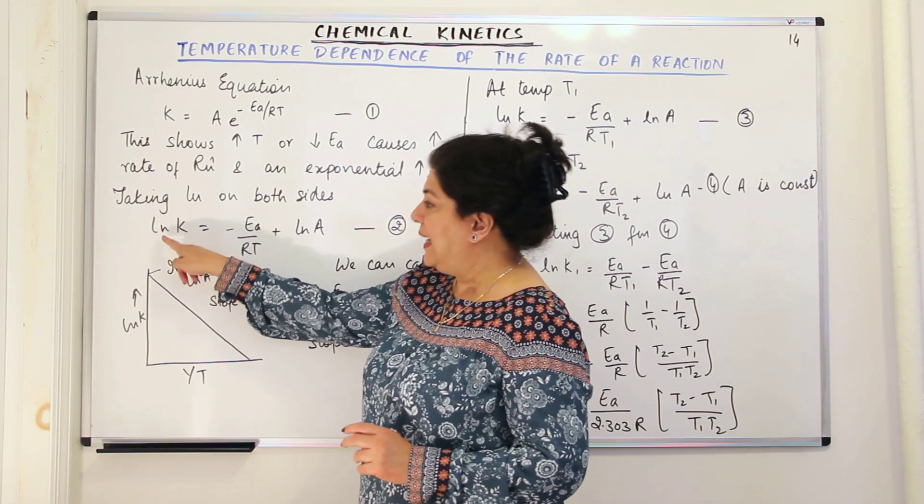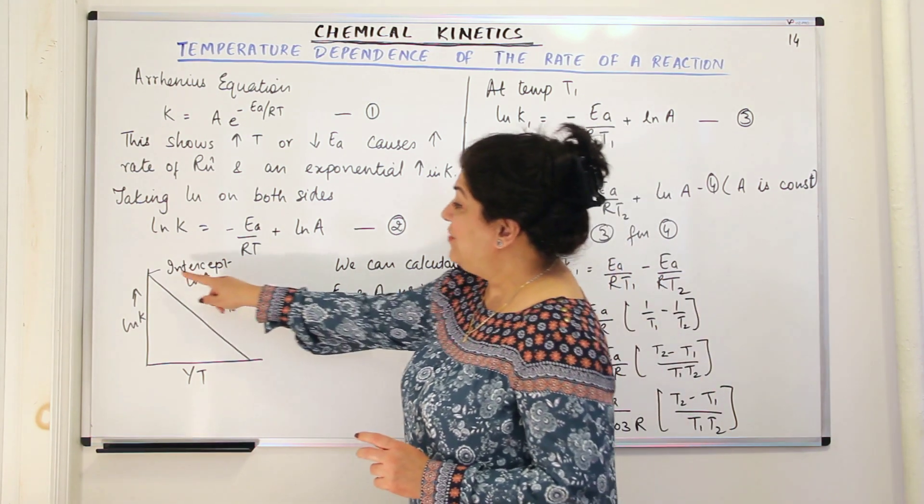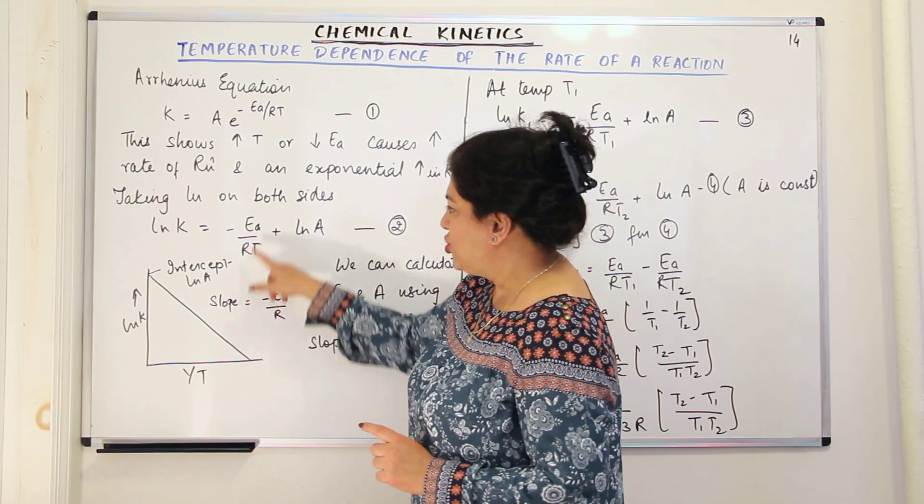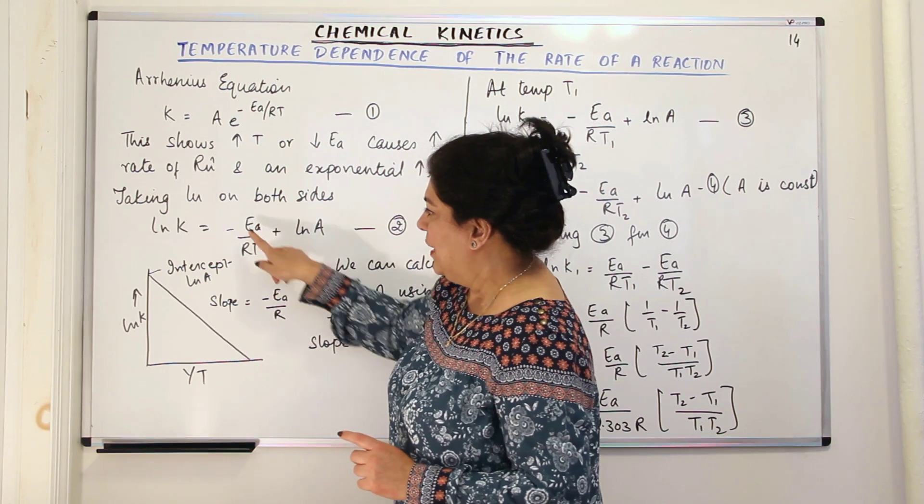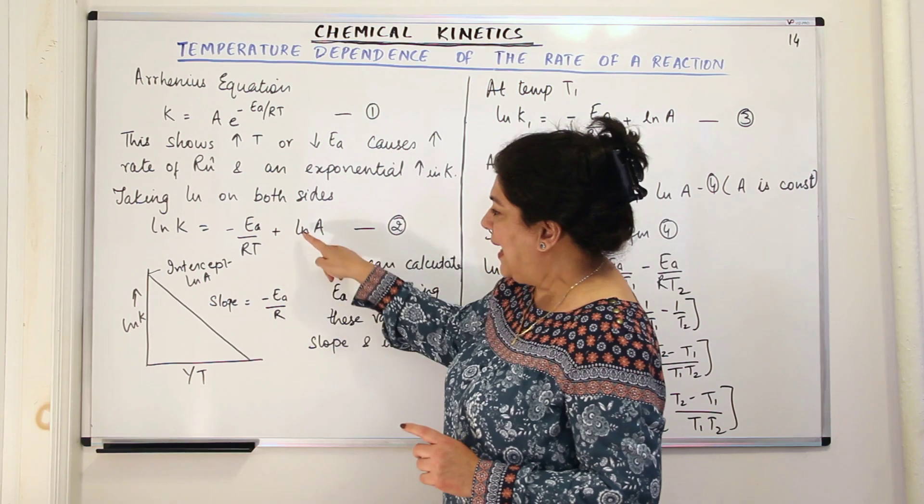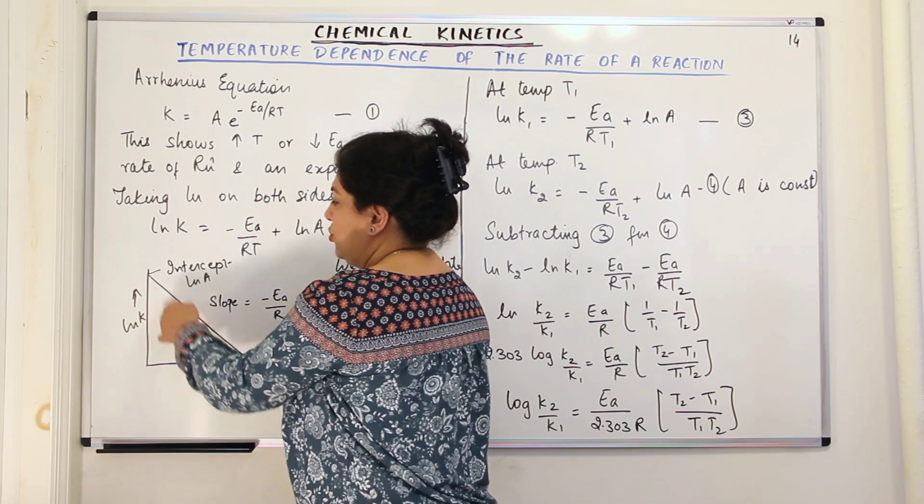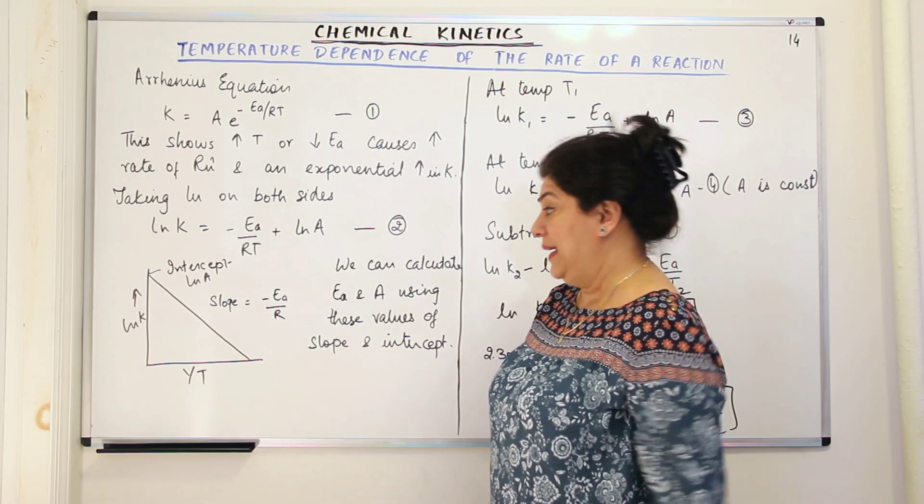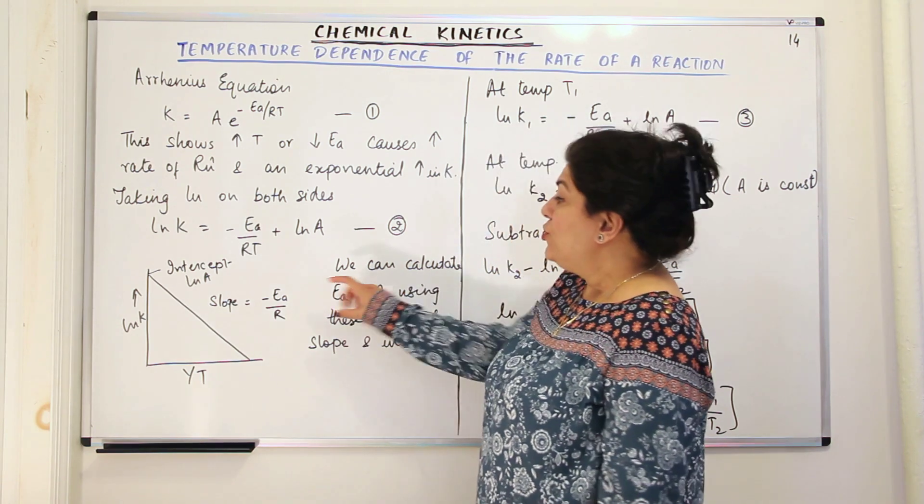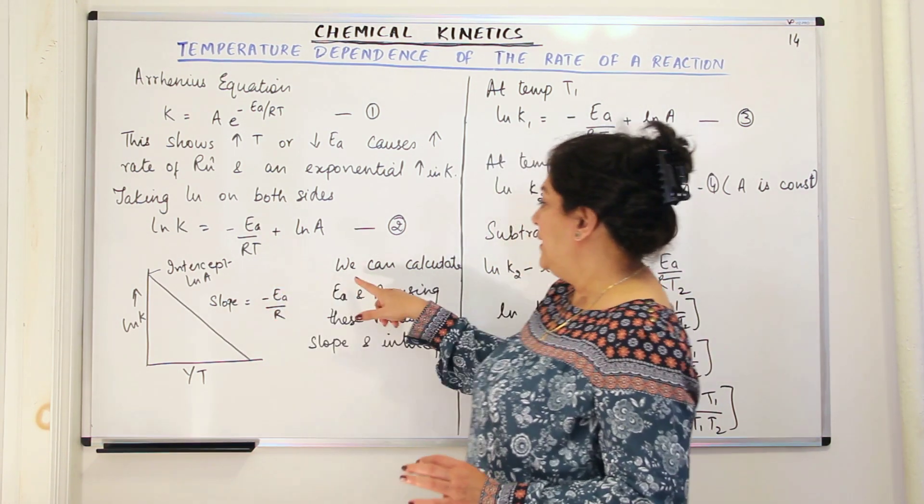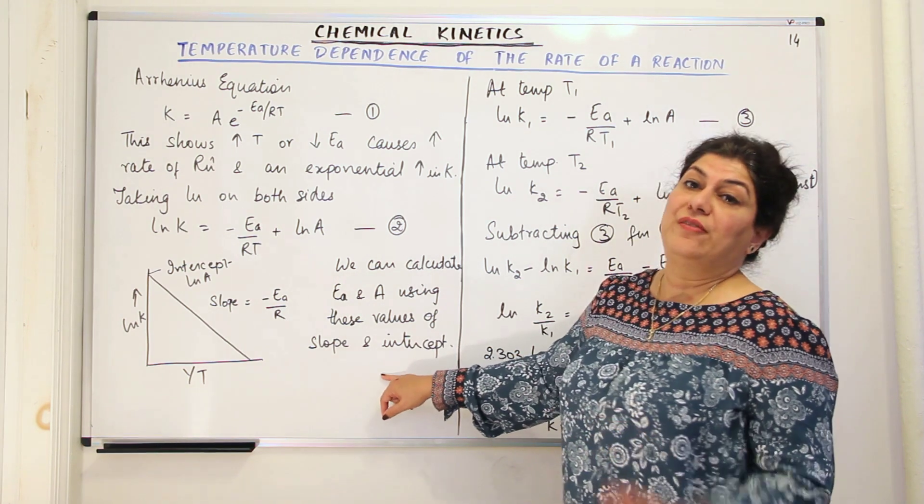Now if we plot a graph between ln k and 1 upon T, we get a straight line. And when we get a straight line, what are the things that you would get? The slope would be equal to Ea upon R. We plotted a graph between ln k and 1 upon T. So Ea upon R is left, that would be the slope of the curve and ln A would be the intercept, that point where the line or the slope will cut the y-axis or the ln k. So from this graph, you can calculate Ea and A values using the values that you get in this graph from the slope and from the intercept.